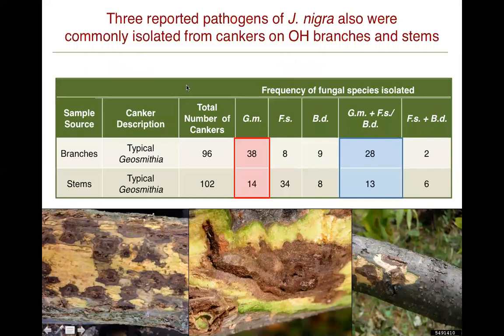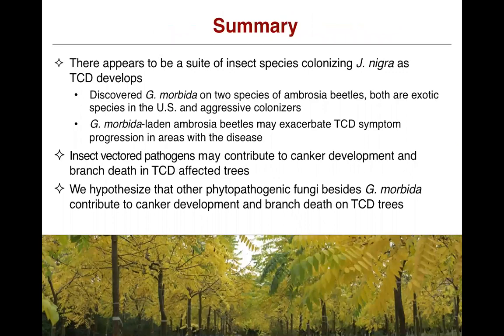When we found Geosmithia, there were also other woody plant pathogens present. This table shows that there were two other pathogens in addition to Geosmithia morbida, and it shows their occurrence. In the branches, there were typical Geosmithia-like cankers, and sometimes we found those cankers alone — just Geosmithia morbida. Other cankers were from Fusarium solanii and Botryosphaeria dothidea, but oftentimes when we found Geosmithia morbida we also found Fusarium solanii and Botryosphaeria dothidea within those cankers.